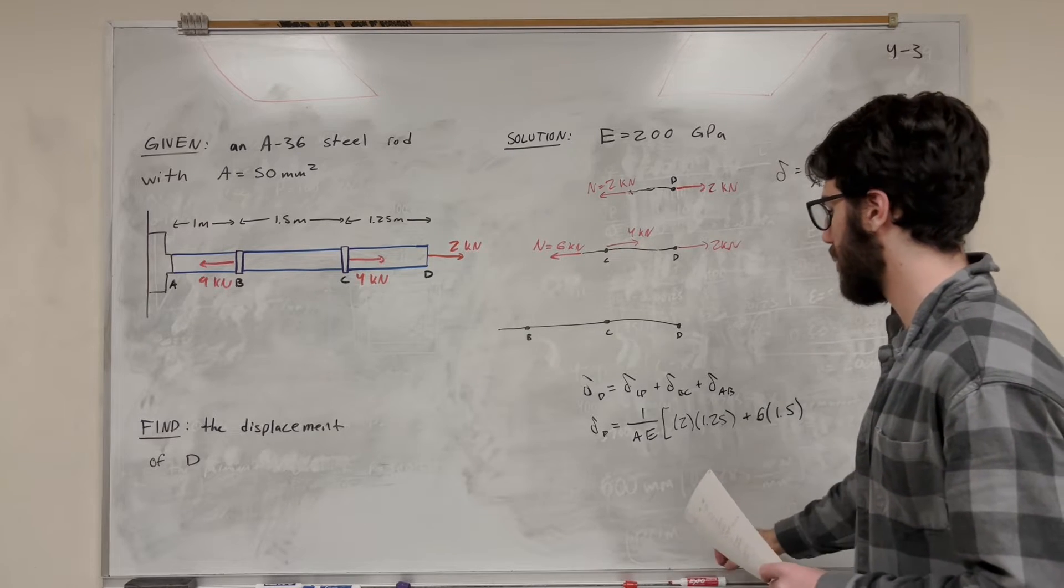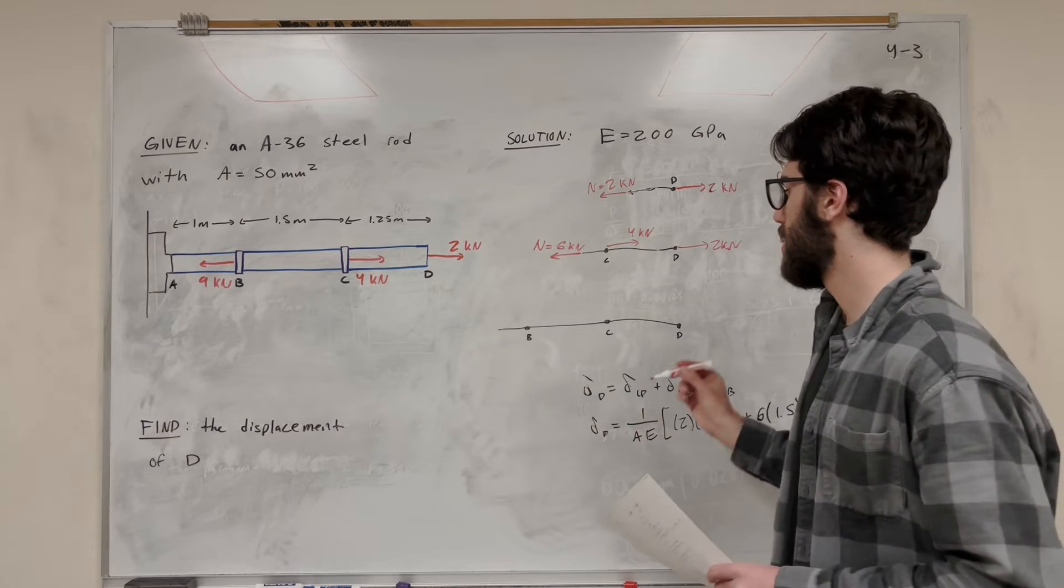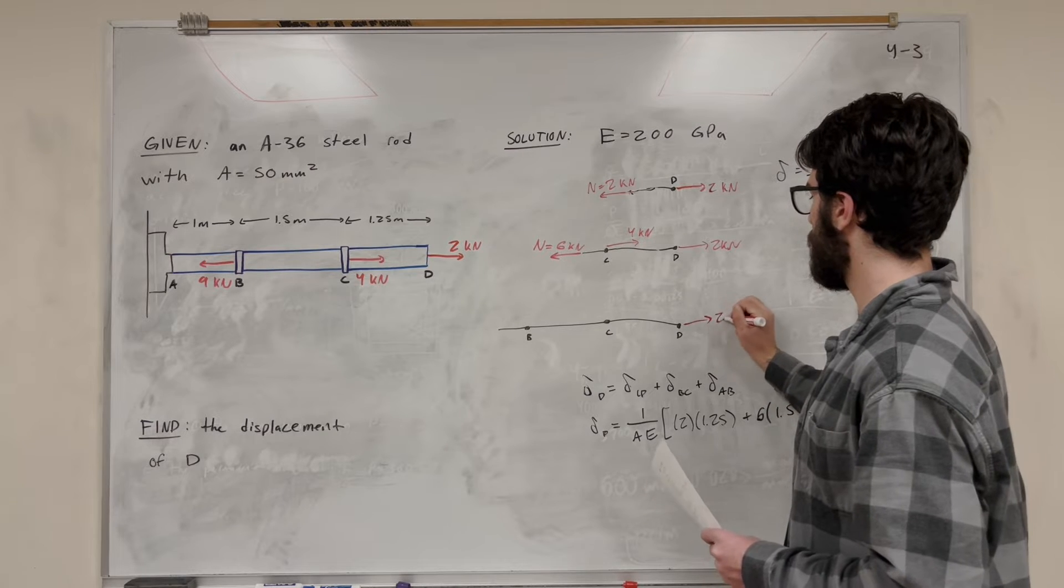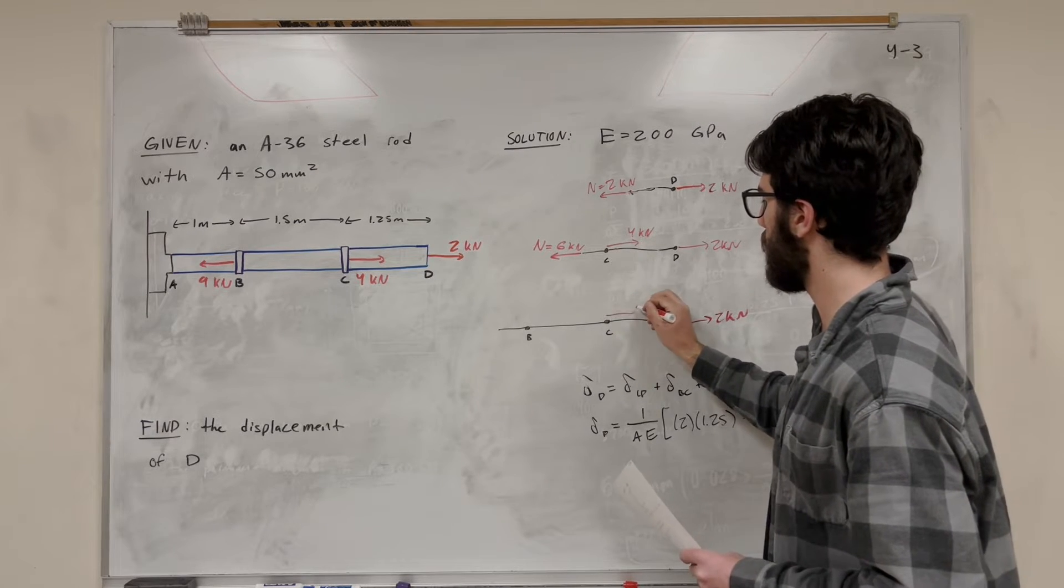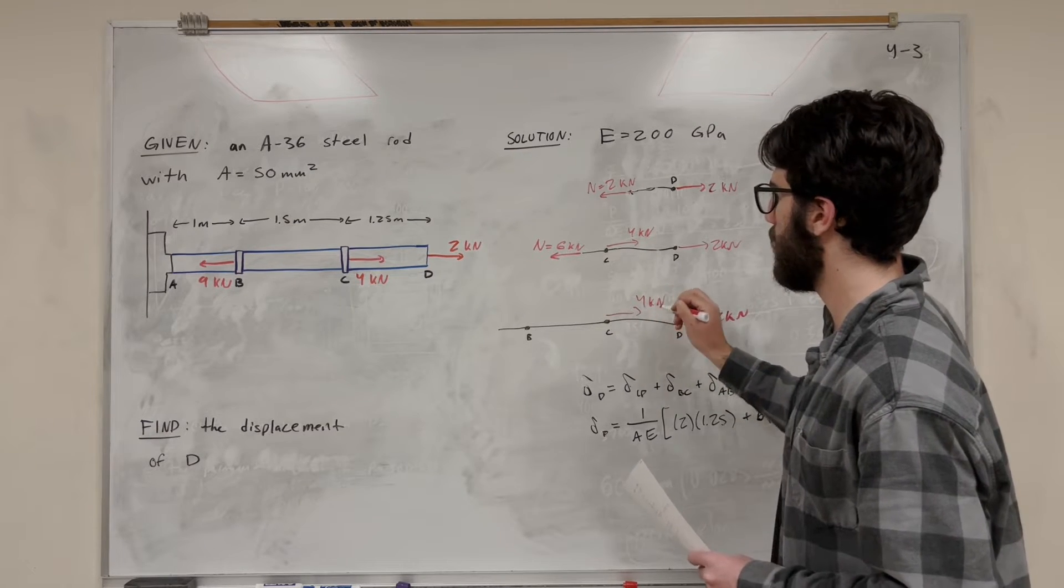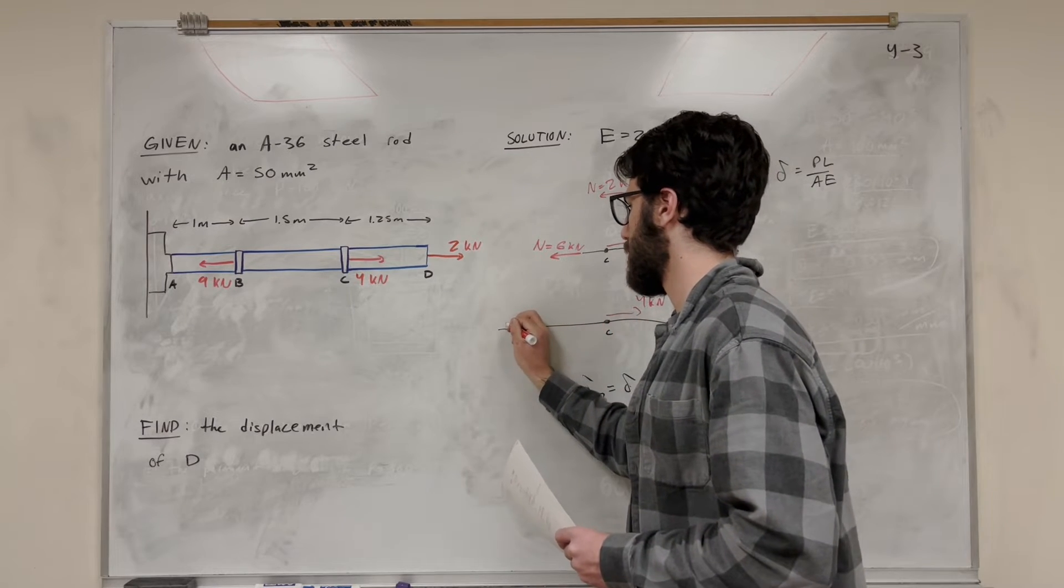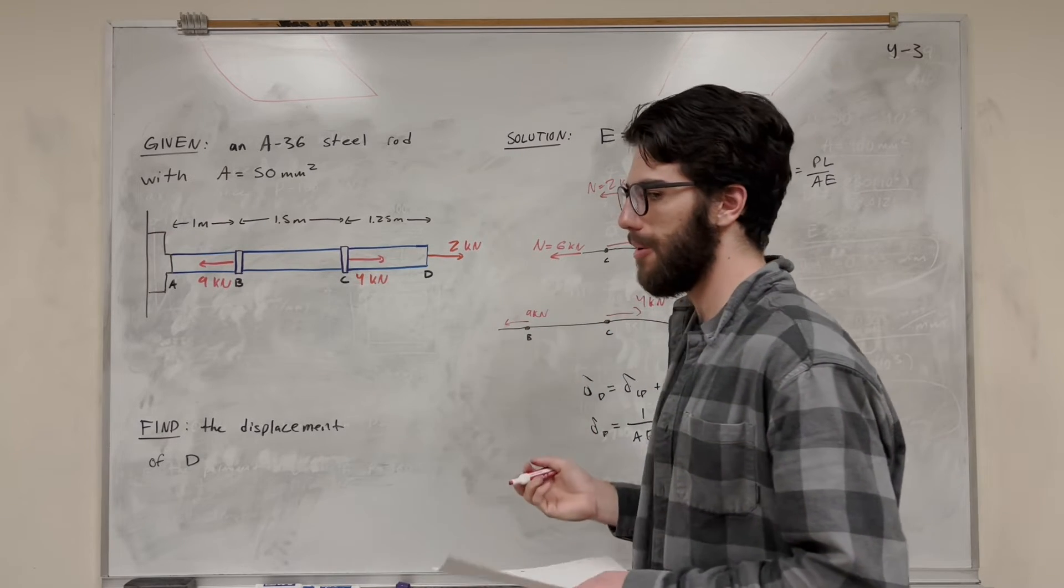All right, so now let's move on to our last one, BA. So let's draw all the forces again, 2 kilonewtons. And now I have this one, which is 4 kilonewtons. But then at B, we have this 9 kilonewtons pushing this way. So 9 kilonewtons pushing that way.